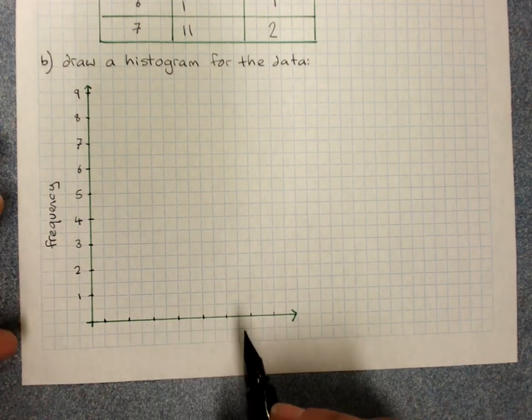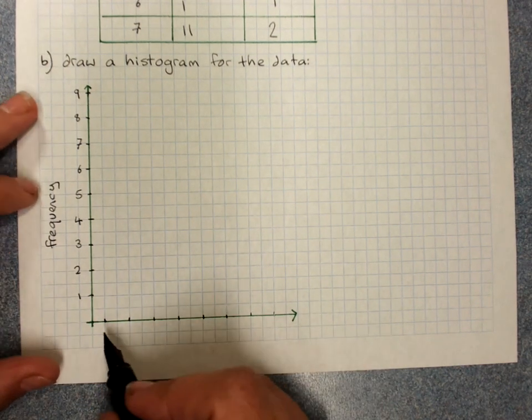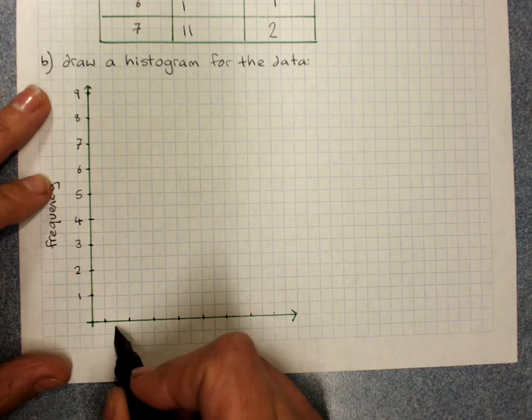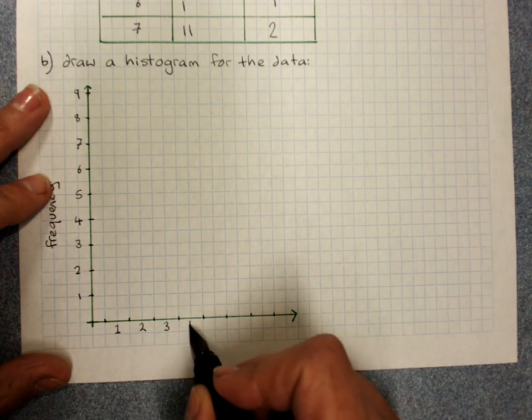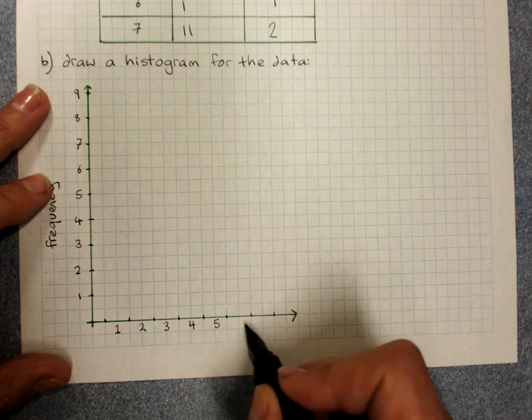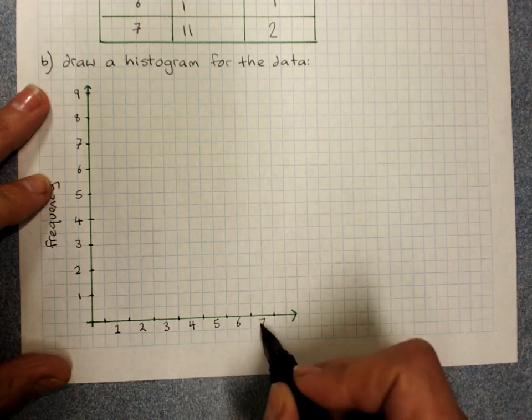And you label them, if you can be very careful, in the middle. 1 kid, 2, 3, 4, 5, 6, 7.